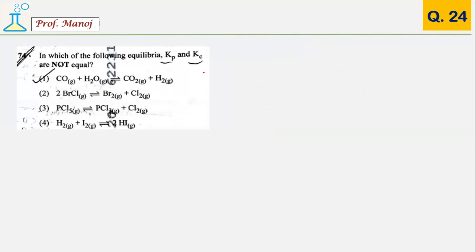Another easy equilibrium question. You have to find where Kp and Kc are not equal to each other. That means you are searching for a condition where delta N is not equal to 0. If you calculate, delta N over here is not equal to 0. Answer is 3.